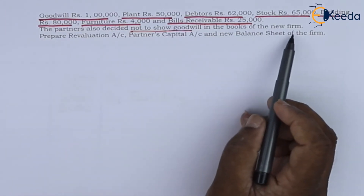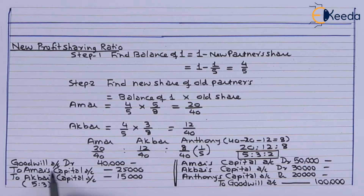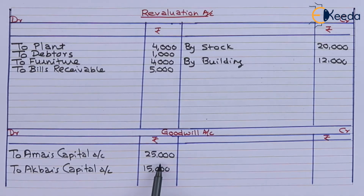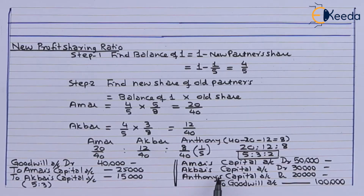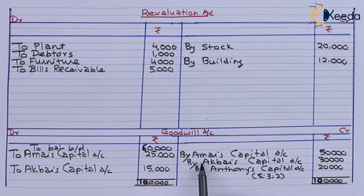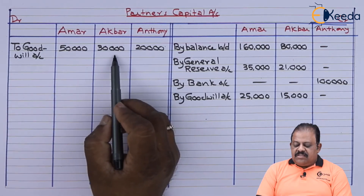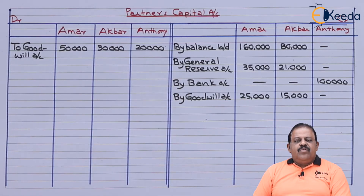Partners decided not to show goodwill in the books of the new firm. For revaluation of goodwill, the entry is: goodwill account debit 40,000, to Amar's capital account 25,000, to Akbar's capital account 15,000. For goodwill write-off, the entry is: Amar's capital account debit 50,000, Akbar's capital account debit 30,000, Anthony's capital account debit 20,000, to goodwill account 1,00,000. Goodwill account gets closed.